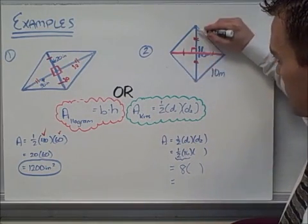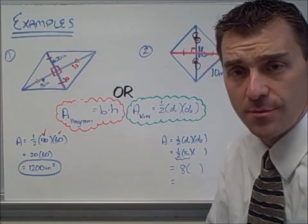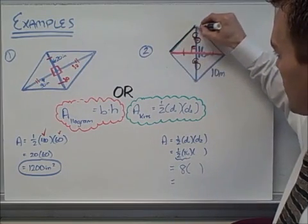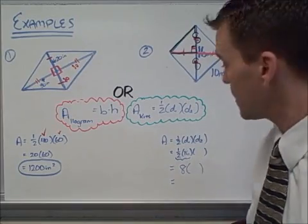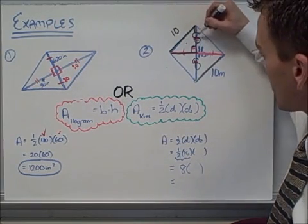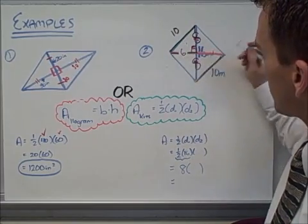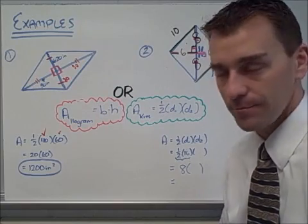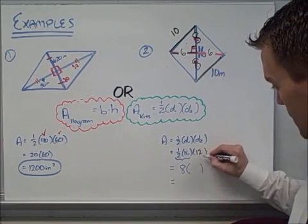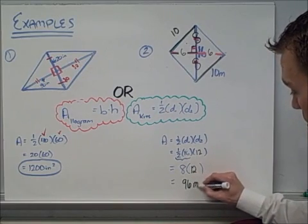Since the diagonal of 16 is bisected, each half is 8. The diagonals are perpendicular, so I have a right triangle with a leg of 8 and a hypotenuse of 10 — that's a Pythagorean triple, so the other leg is 6. That means the other diagonal is 12. Plugging into the formula: one half times 16 gives 8; 8 times 12 is 96 meters squared.